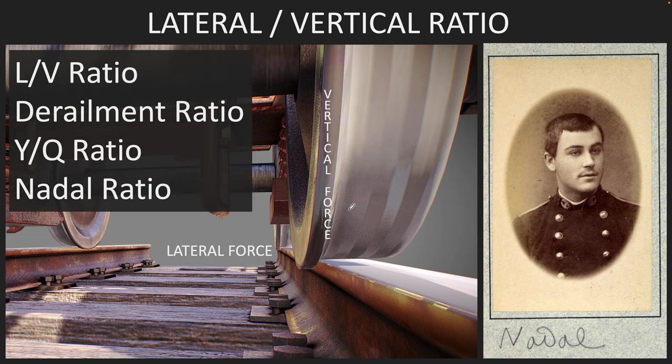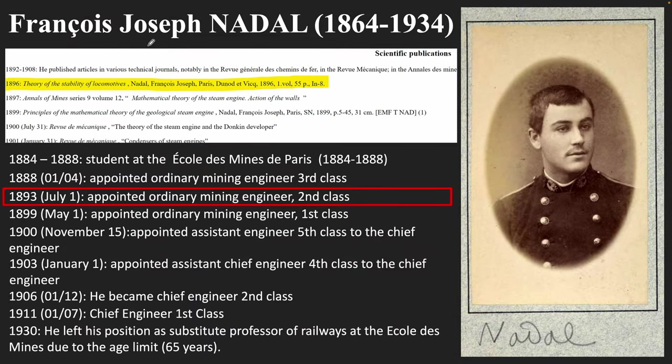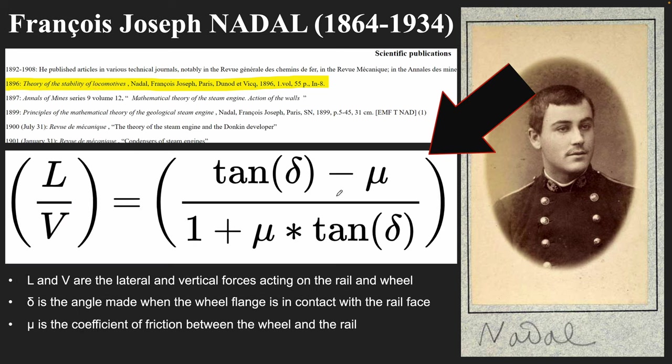This L/V ratio was first devised by this gentleman called Francois-Joseph Nadal in the year 1896. In his paper, Theory of Stability of Locomotives, the paper was written in French while he was a mining engineer. So this is how the formula looks.